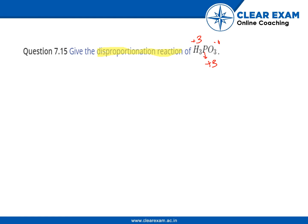We have to give the disproportionation reaction for H3PO3. Since the oxidation state of P is plus three, in the product side there will be two products. One product will have oxidation state greater than plus three and the other product will have oxidation state of phosphorus less than plus three.